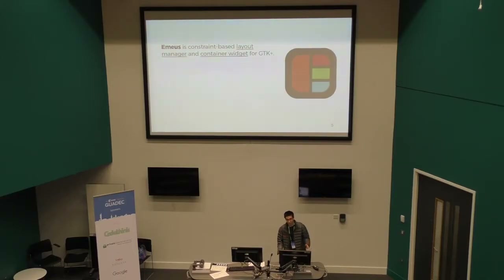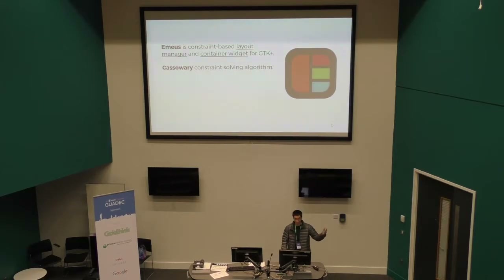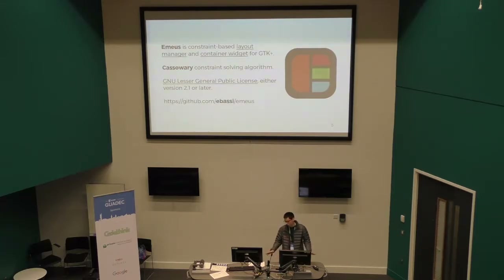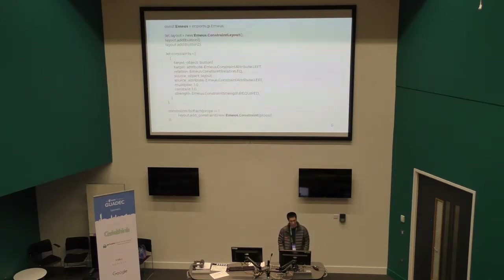For this, we created Emmaus, which is a constraint-based layout manager and container widget for GTK. It is based on the Cassowary constraint-solving algorithm — I have no idea how to pronounce it properly, but I speak Spanish. It's been released under LGPL and was mostly — 99% — written by Emanuele, with some contributions from others, like me.